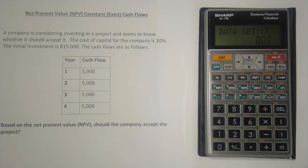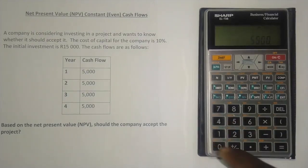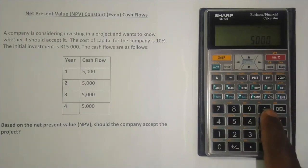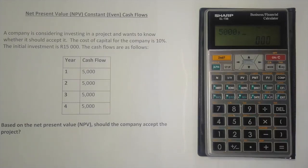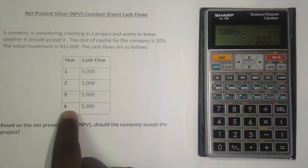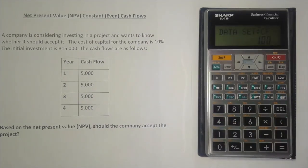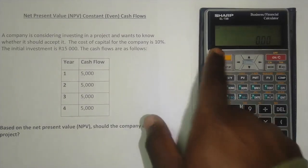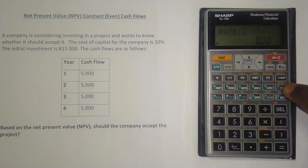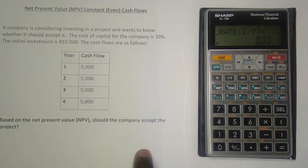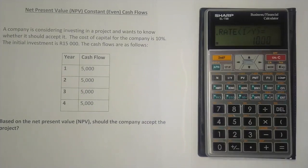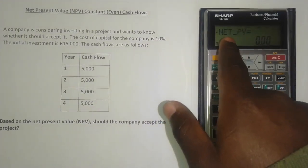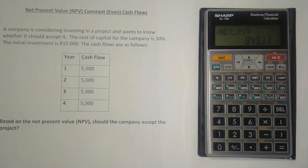Next, enter the cash flows. Since they're constant, enter 5,000 rand as a positive, then press the x-comma-y key. You then enter how many years it occurs for — four years — and press enter. Clear the screen, then press second function and then CFi. Enter the interest rate of 10 and press enter, then press the downward arrow. It shows the net present value, so press comp (compute).